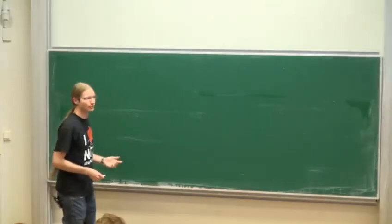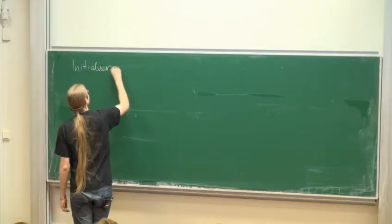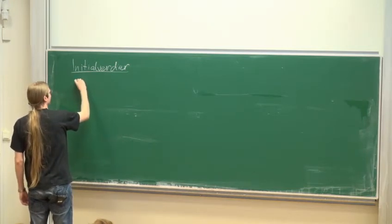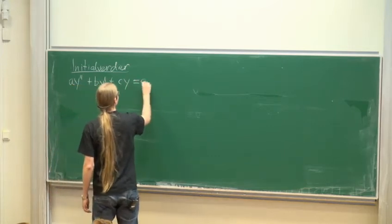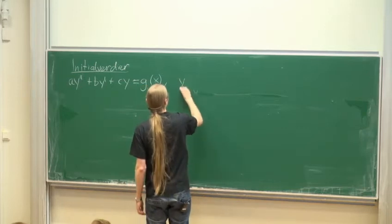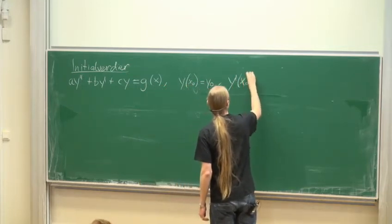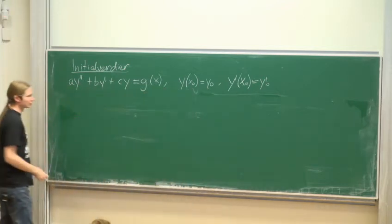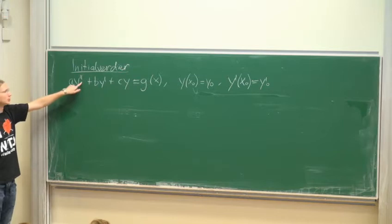Dette gjelder for alle typene differensialligninger vi har sett på, og for så vidt alle andre. Initialverdier: Hvis vi har en differensiallikning, for eksempel ay dobbeltderivert pluss by derivert pluss cy lik g av x, og vi får vite at y av x0 er lik y0 og y derivert av x0 er lik y derivert 0 – det er tilleggsopplysninger. Det pleier å være samme antall som ordenen til differensialligningen; annenordens pleier å ha to verdier.